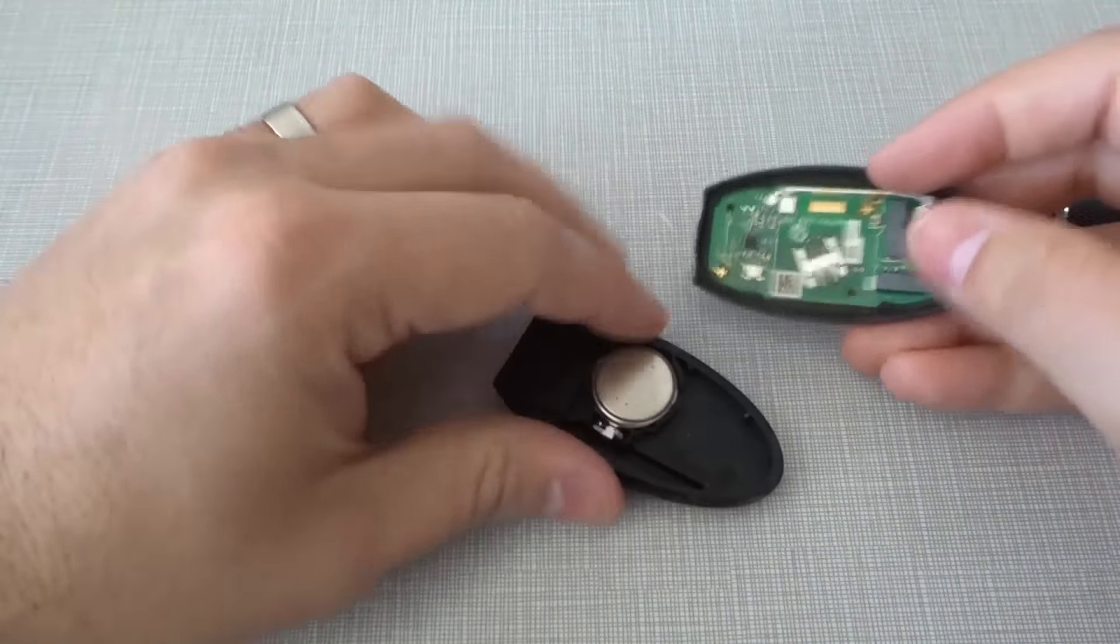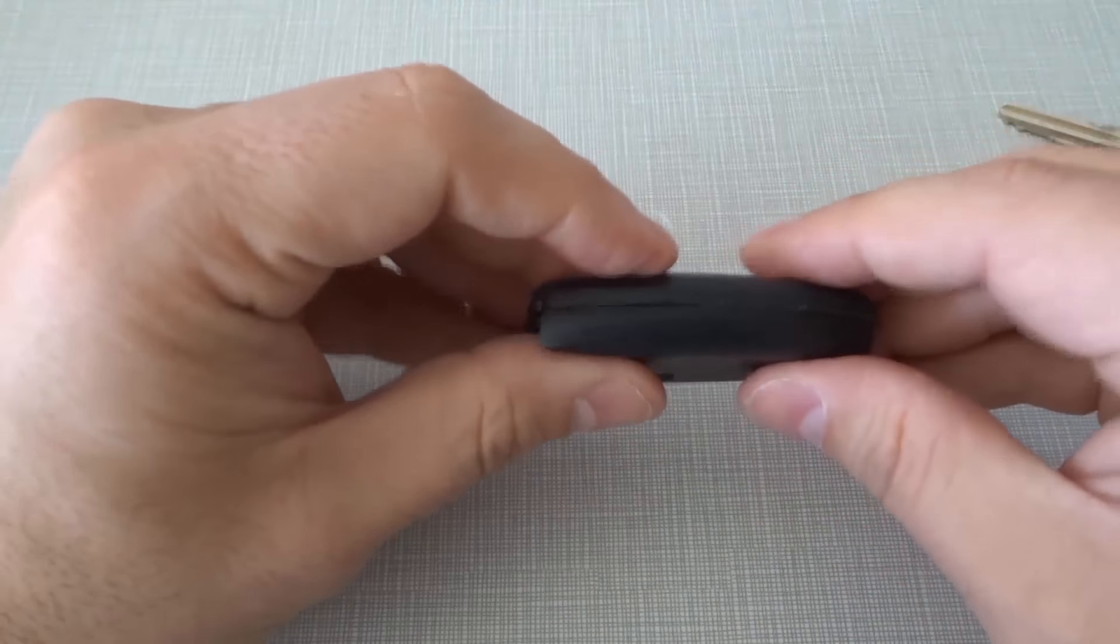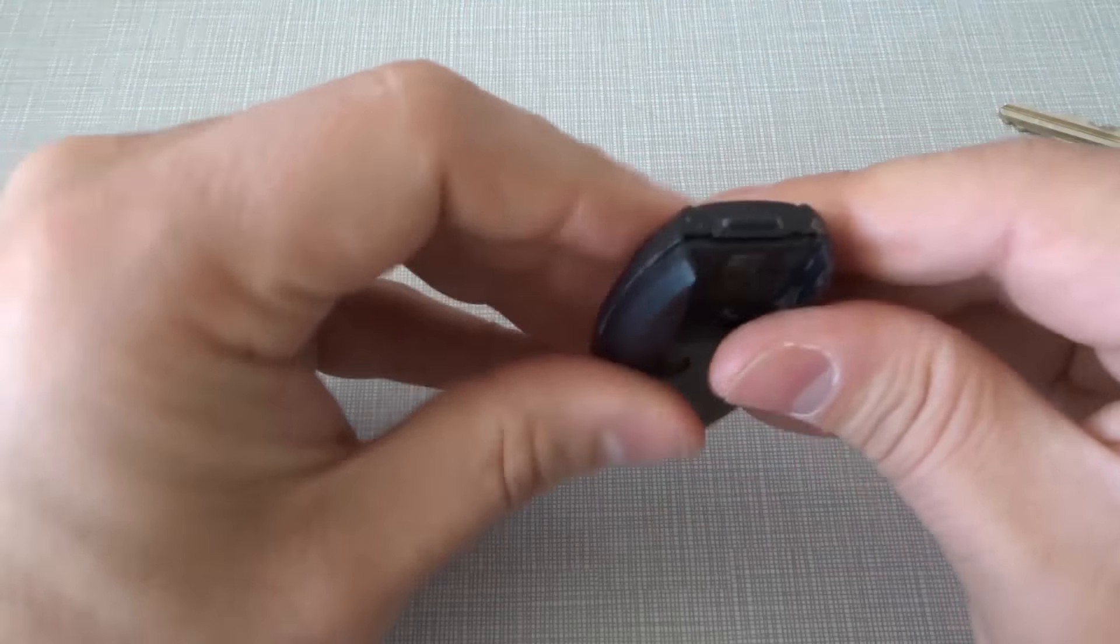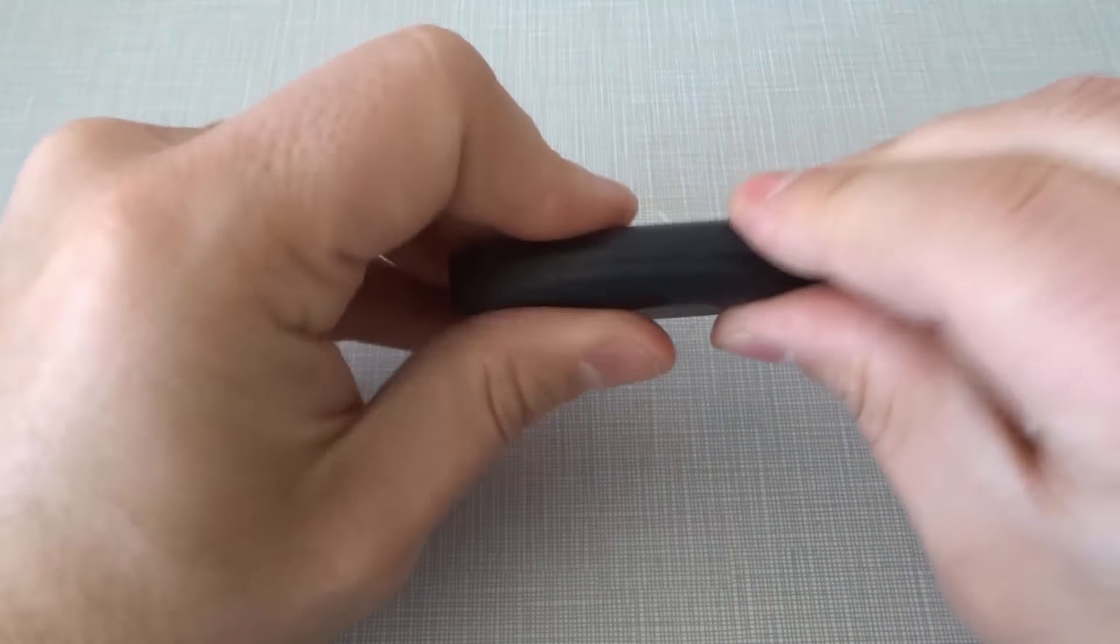So once again, we're just going to get the rounded side, match it up with the rounded side just like that. Press it together when it's lined up, just like that. Make sure that it all clicks into place nicely, which there we go.